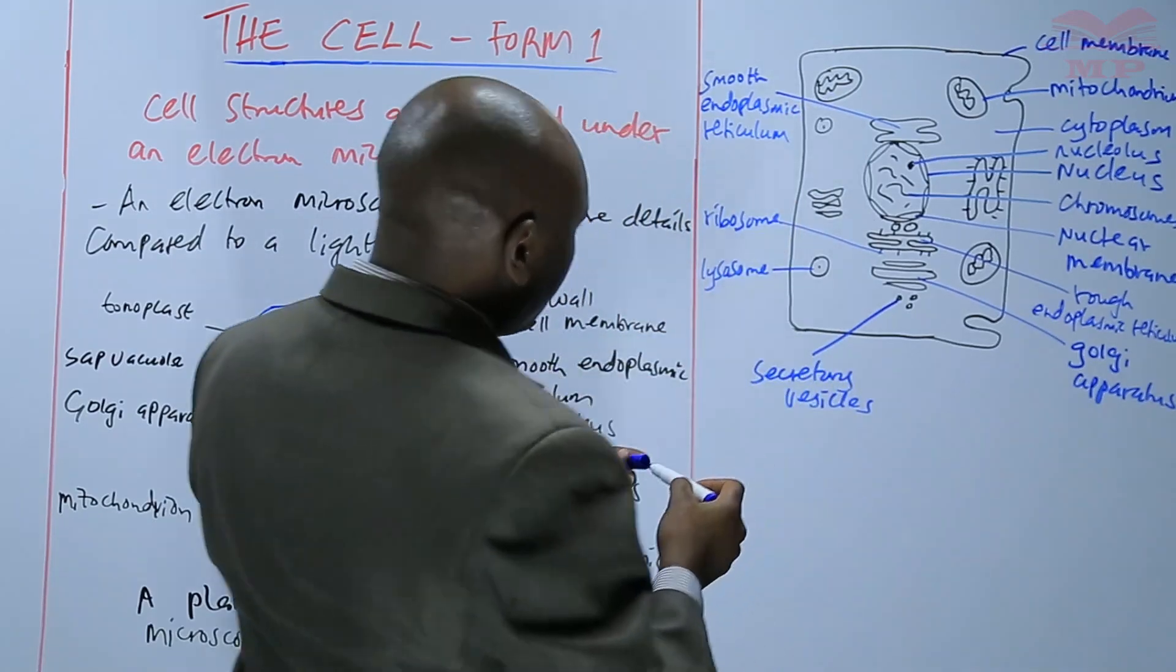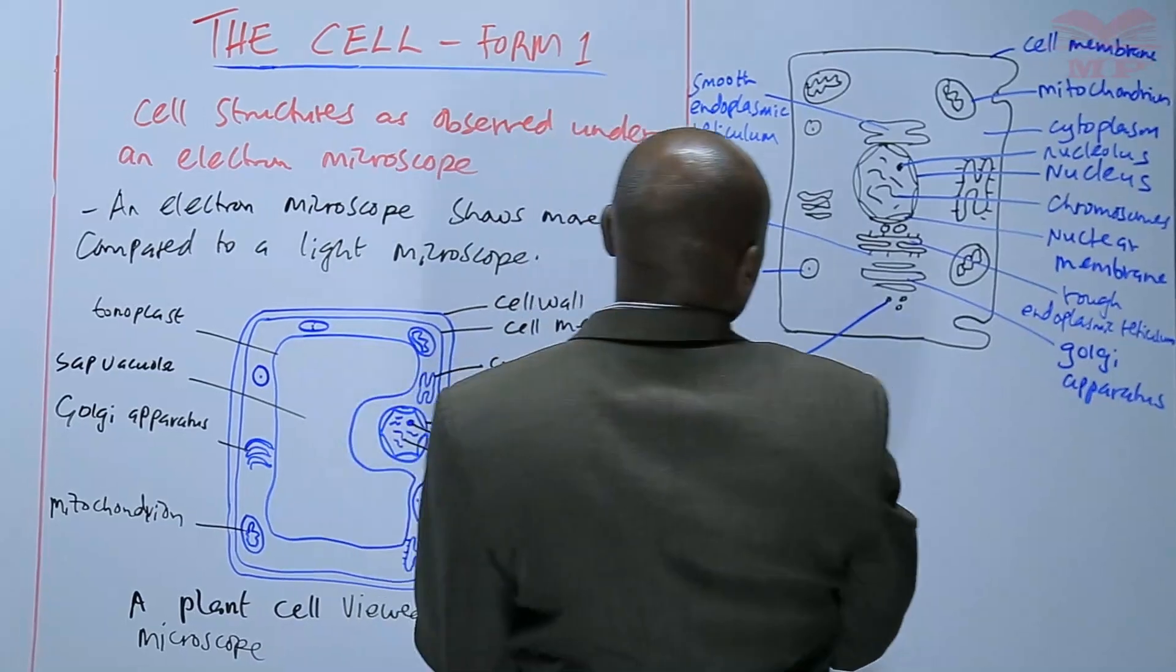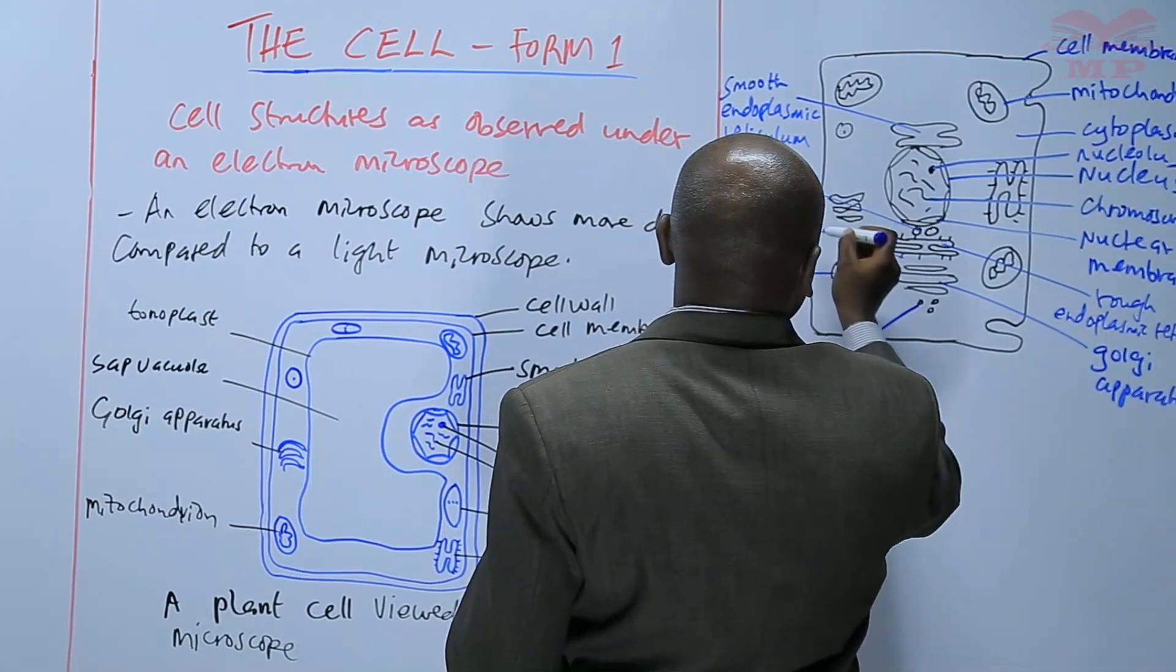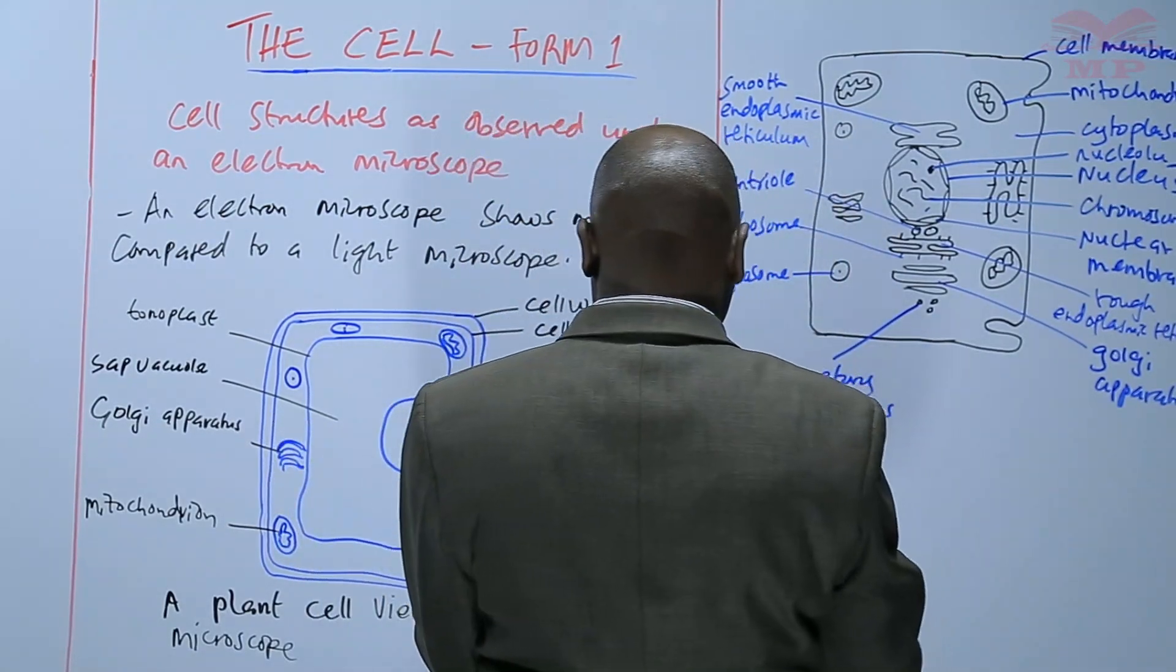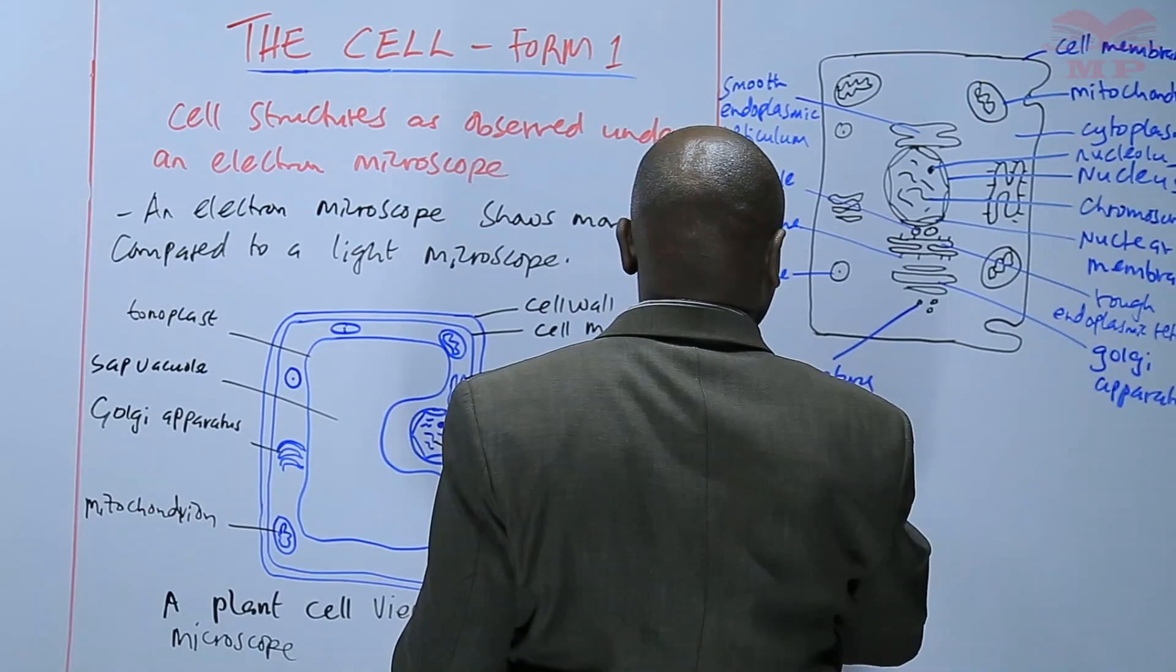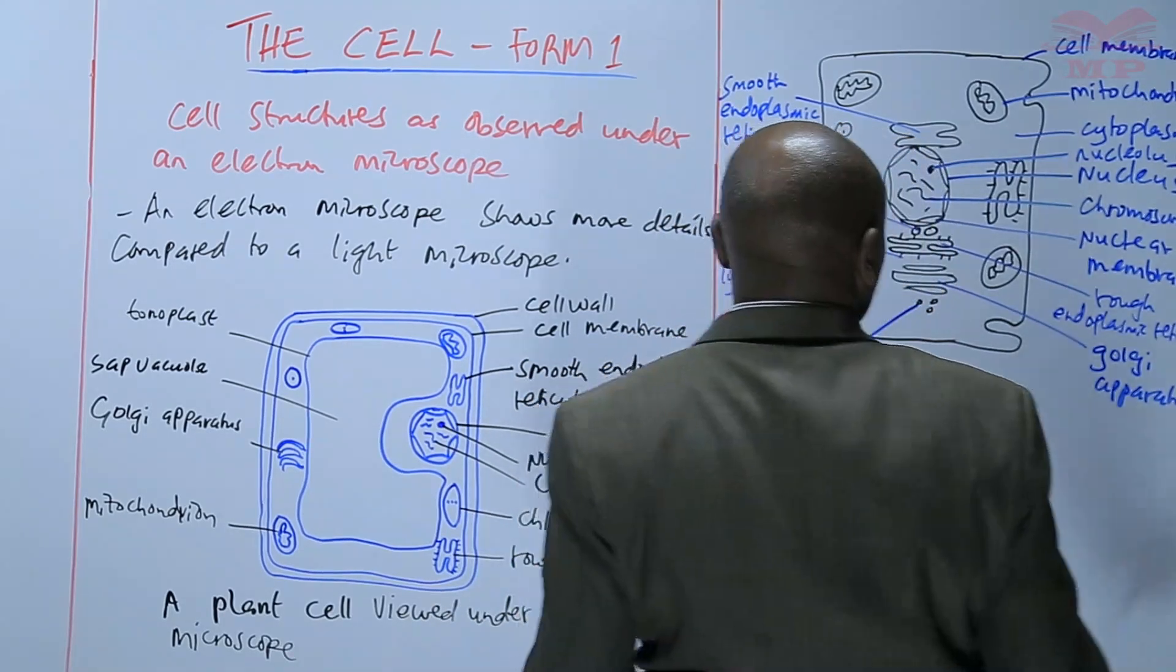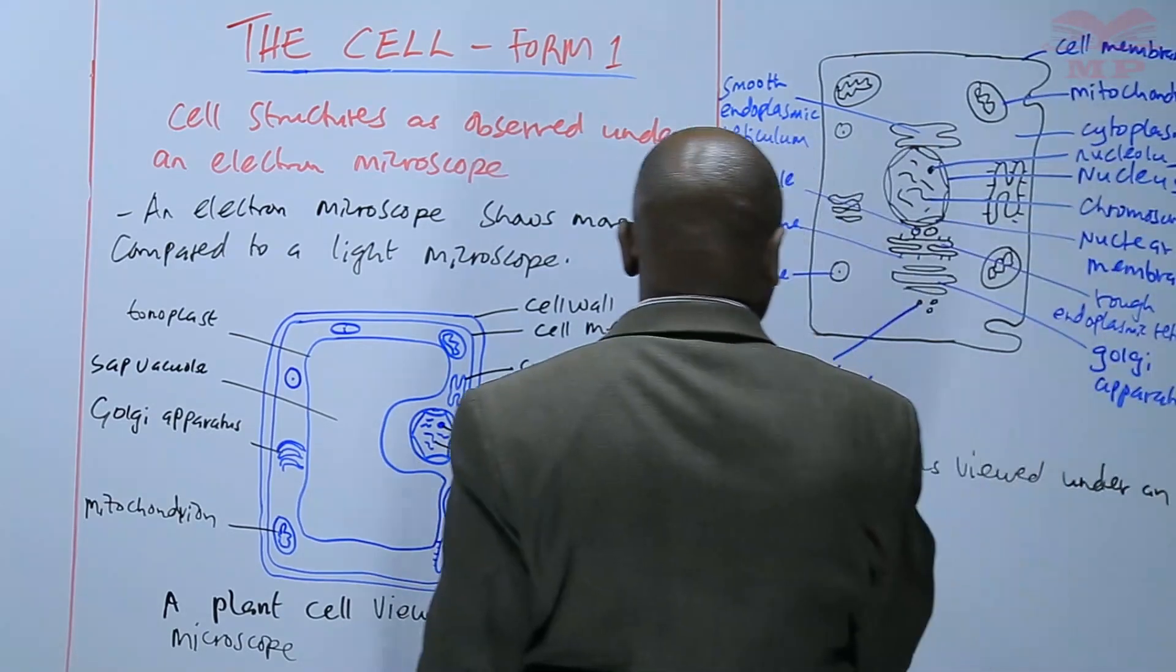We have the smooth endoplasmic reticulum. Basically we can be able to view so many organelles. We can view the centrioles. So this is an animal cell as viewed under an electron microscope.